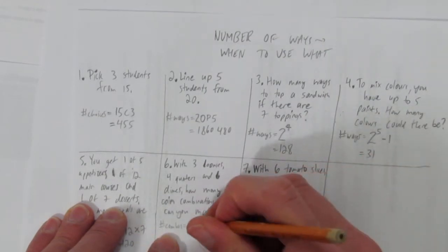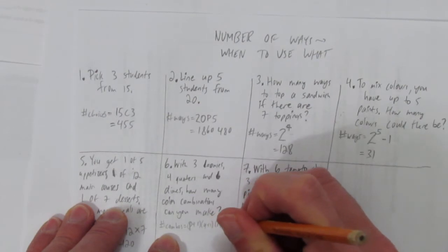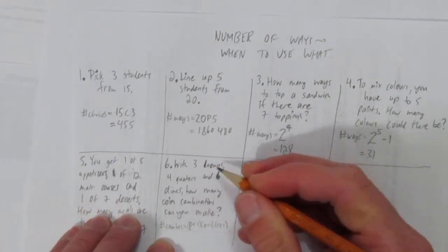In which case, we use that formula (p+1)(q+1)(r+1), and more brackets if there were more things, but we only have three.